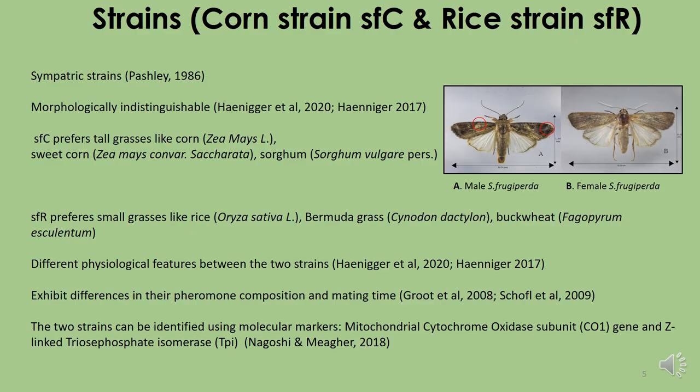Both corn and rice strains of the fall army worm are sympatric strains. The images here show male and female fall army worms, but between the two strains they are morphologically indistinguishable. The corn strain prefers tall grasses like corn, sweet corn, and sorghum, and the rice strain prefers small grasses like rice, bermuda grass, and buckweed. The two strains have different physiological features and exhibit differences in their pheromone composition and mating time.